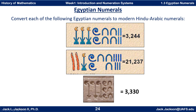Similarly, we have seven staffs — that's a seven in the units. Three heel bones — a three in the tens spot. Two scrolls — two hundreds. One lotus flower — one thousand. And two fingers — two in the ten-thousands spot. For the third number: three lotus flowers, three scrolls, three heel bones, no units — so a zero there — giving three, three, three in the thousands, hundreds, and tens spots.